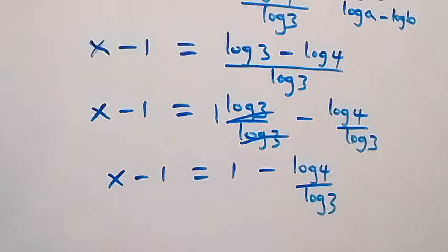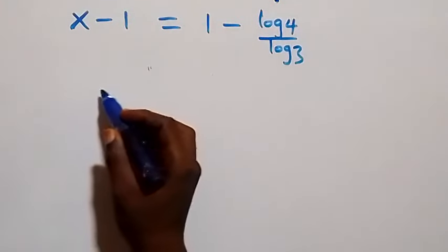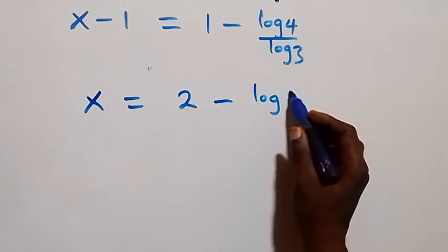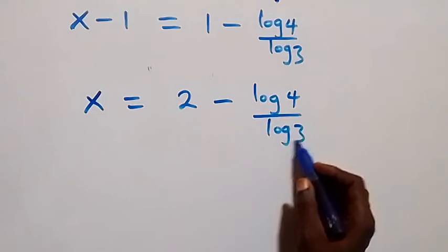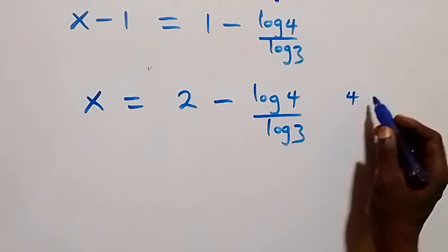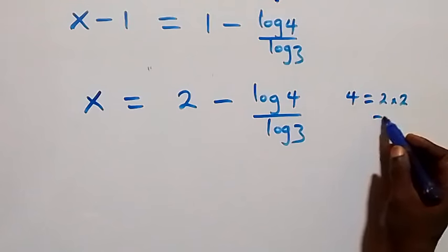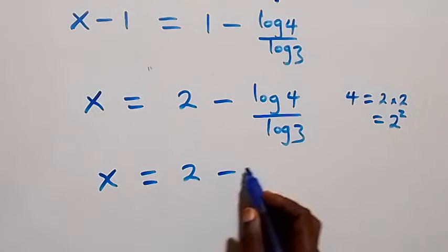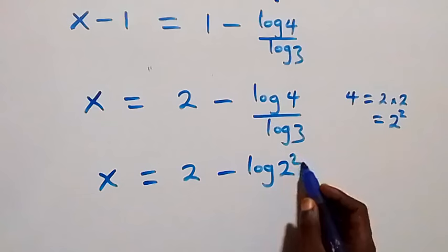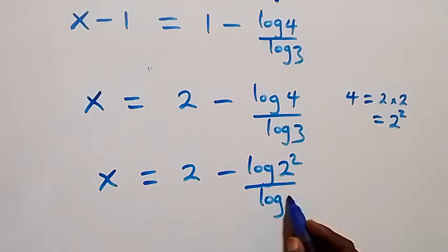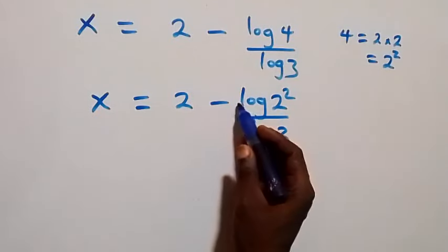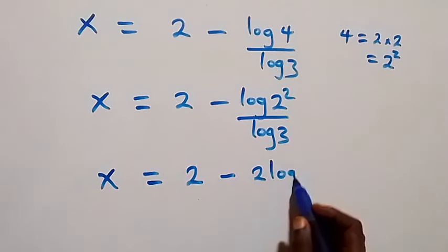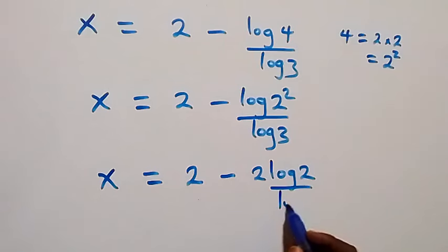Taking minus 1 to the other side it becomes plus 1, and we have x equals 1 plus 1, that is 2, then minus log 4 over log 3. Since log 4 equals log 2 squared, we apply the power law so 2 comes down: x equals 2 minus 2 log 2 over log 3.